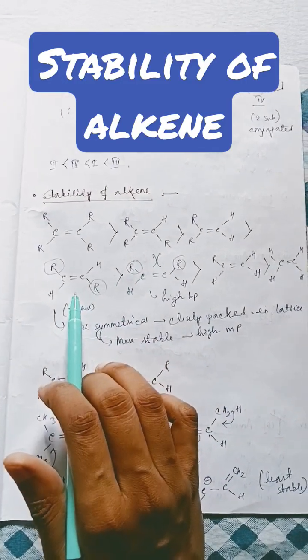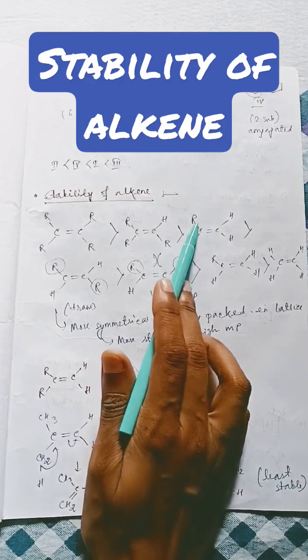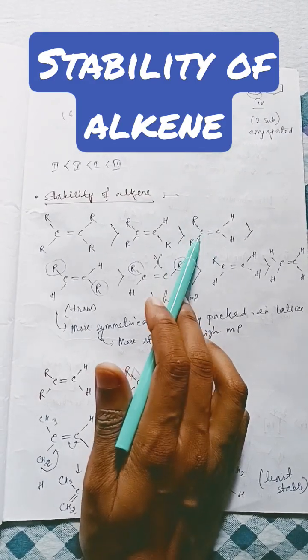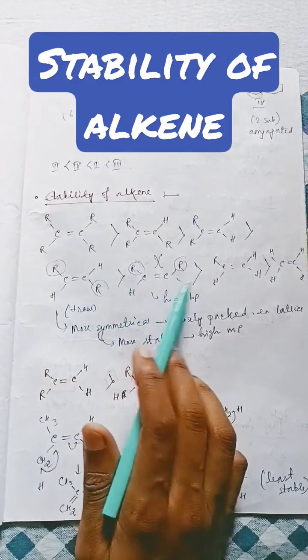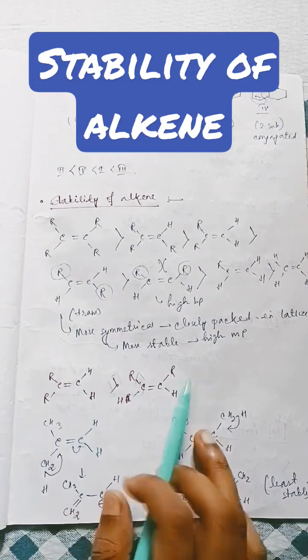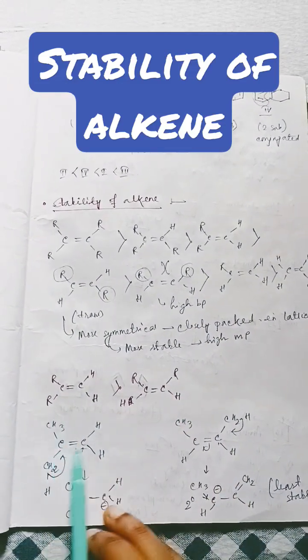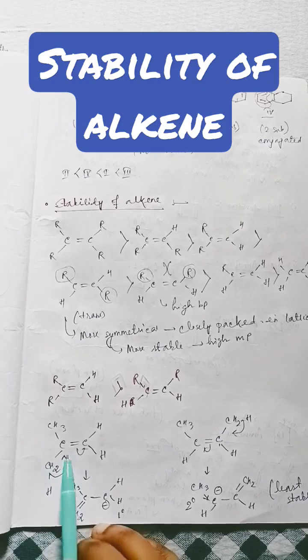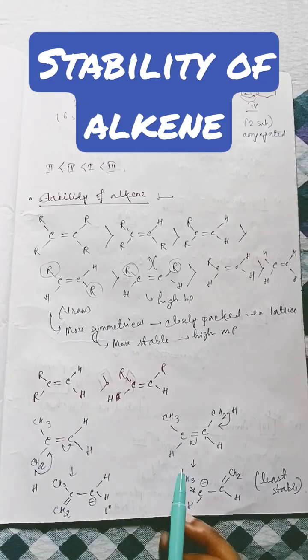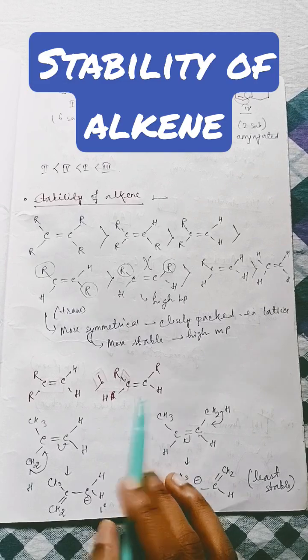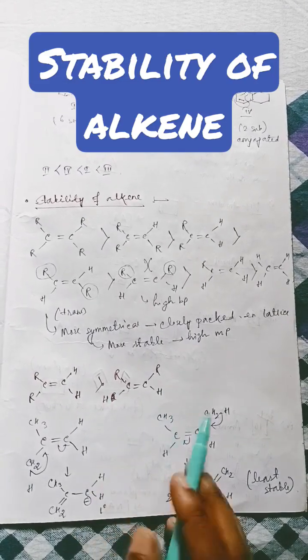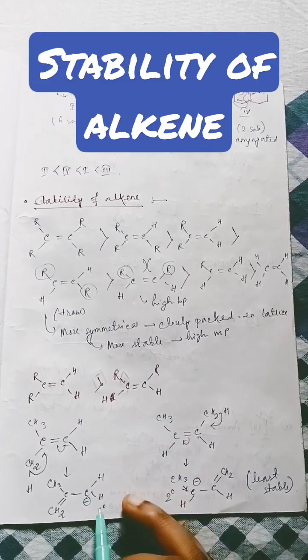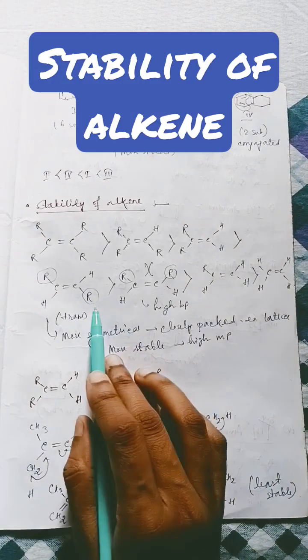So trans is more stable. But why this one, the two substitution attached at same carbon, is more stable than this one? Now you have to look at the hyperconjugation. So see, if you just make this hyperconjugative structure, you can see there is one degree carbon formed and here two degree carbon formed in case of cis or trans, so it is less stable.